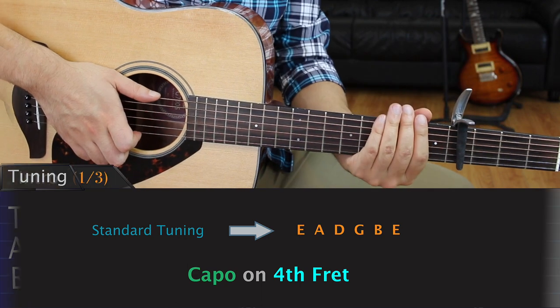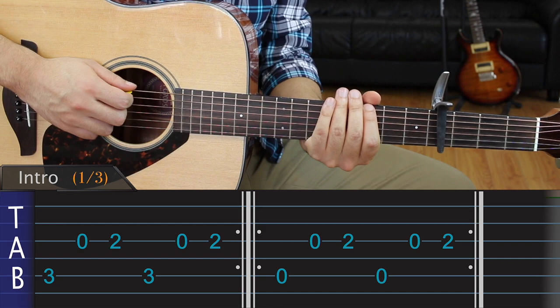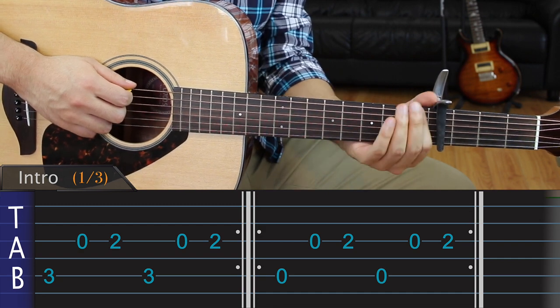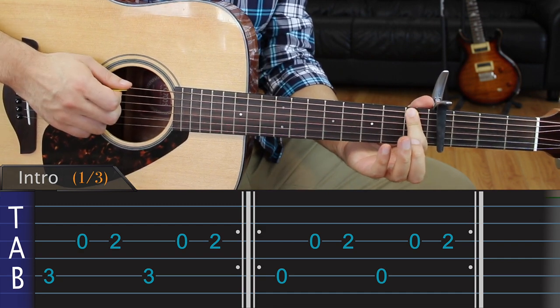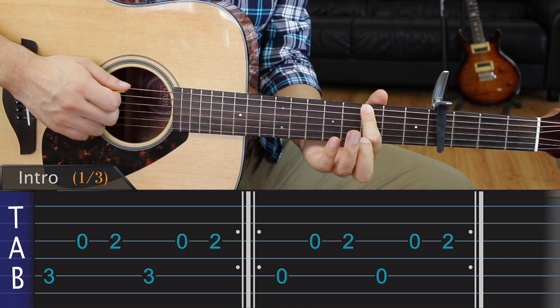Alright, let's take a look at the intro. I just want to start by mentioning that the tabs listed on the bottom of the screen are in relation to the capo. For example, this fret over here is the first fret, this would be the second fret, this would be the third fret, and so on and so forth.